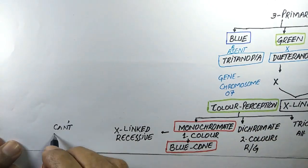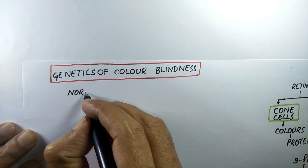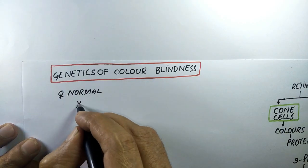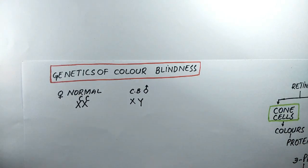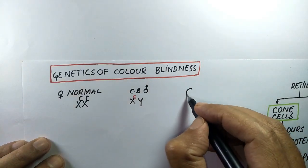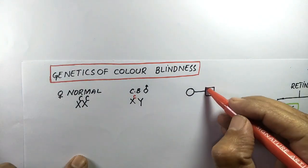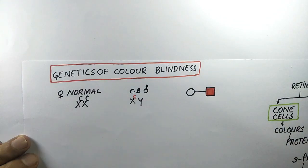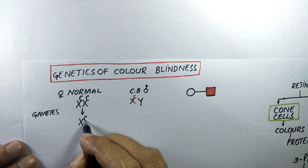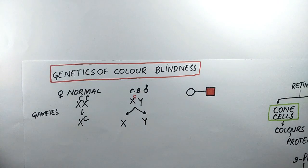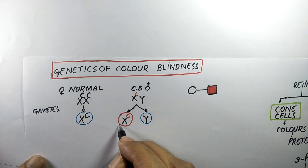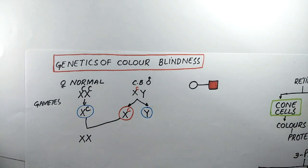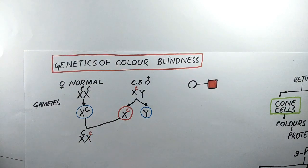Now we will discuss the inheritance patterns of colorblindness. In a pedigree analysis, a female with two normal genes on the X chromosome marries a male with a mutated gene on the X chromosome for colorblindness. A female is represented by a circle, a male by a square, and red color represents the disease. The female produces a single type of egg and is homogametic, while the male produces two types of gametes: one containing the X chromosome and other containing the Y chromosome.